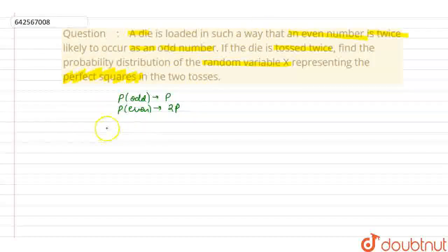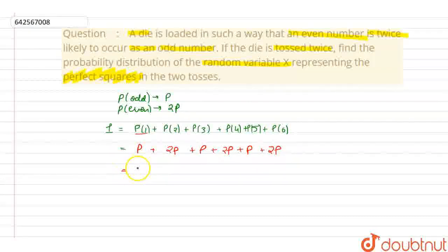We know that sum of all probabilities is equal to 1. For a die, the sum of probability for 1 plus probability of 2 plus probability of 3 plus 4 plus 5 plus probability of 6 equals 1. From here, the probability of 1, being an odd number, will be p. Similarly, for 3 it will be p, for 5 it will be p. And for 2 it will be 2p, for 4 it will be 2p, and for 6 it will be 2p. The sum of these will come out to be 9p equals 1. So the value of p will come out to be 1 upon 9.